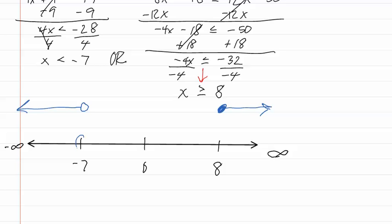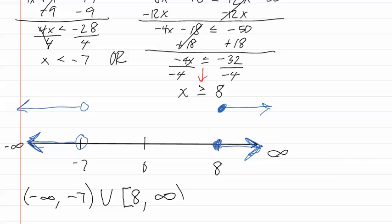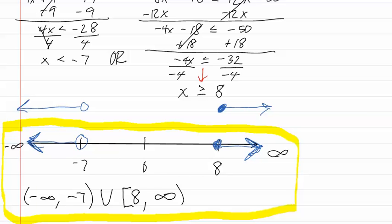We now combine both of these onto the graph. Then we write our interval notation: parenthesis, negative infinity, comma, negative seven, parenthesis — because of the open dot. We use a union symbol because there is a gap, then a bracket for the equal to, eight, comma, positive infinity, parenthesis. Remember, both the graph and the interval notation are part of our answer. When doing 'or' inequalities that go in two directions, you will always use the union symbol. Remember that whenever you use infinity, you must use a parenthesis.